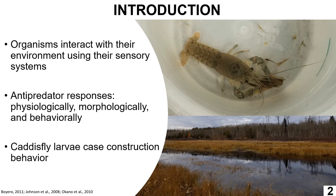Organisms interact with the environment using their sensory system to detect information and they respond based on the information detected. For an organism to ensure survival, it needs to be able to detect predation risk and respond based on the intensity of that risk. These responses could come in the form of physiological, morphological, or behavioural responses.